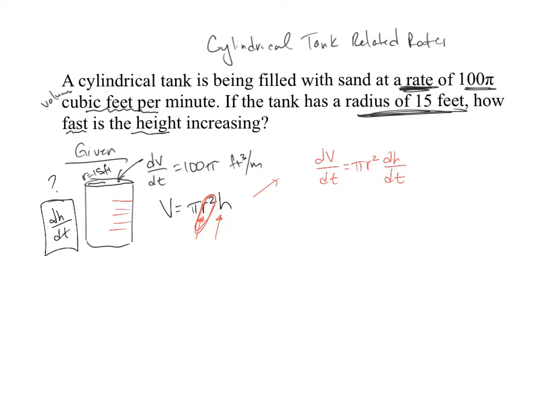Now, suppose you had taken the derivative of it and you used a product rule. Well, then you'd sit there and say, what is dr/dt? Well, it's not changing, so that would be zero. So it would cancel itself out regardless.